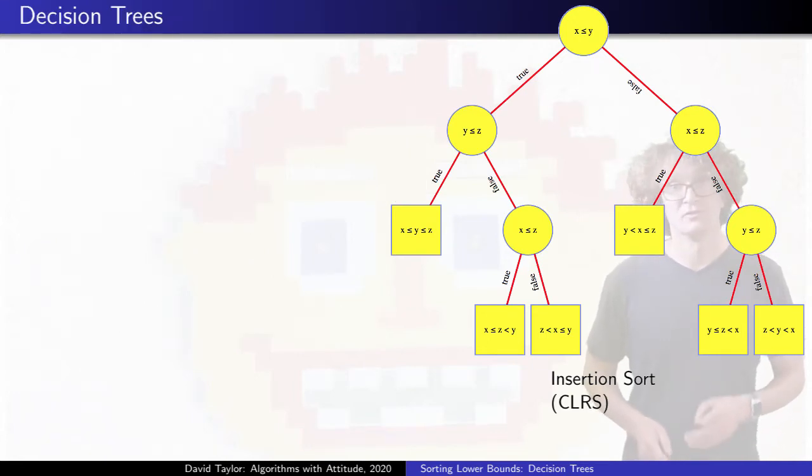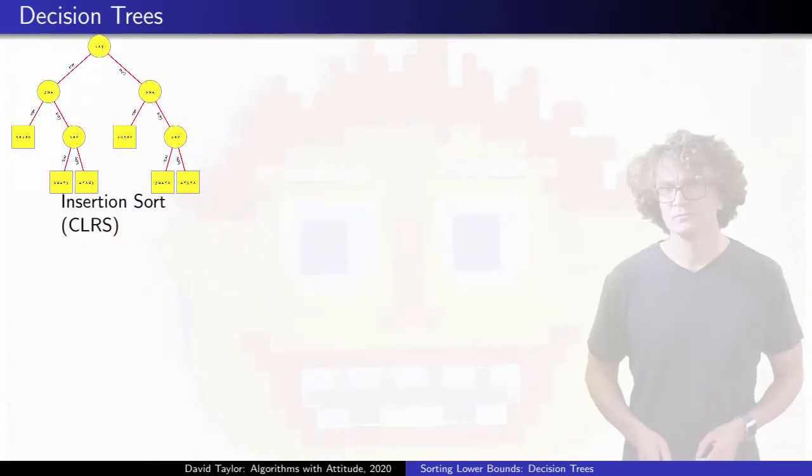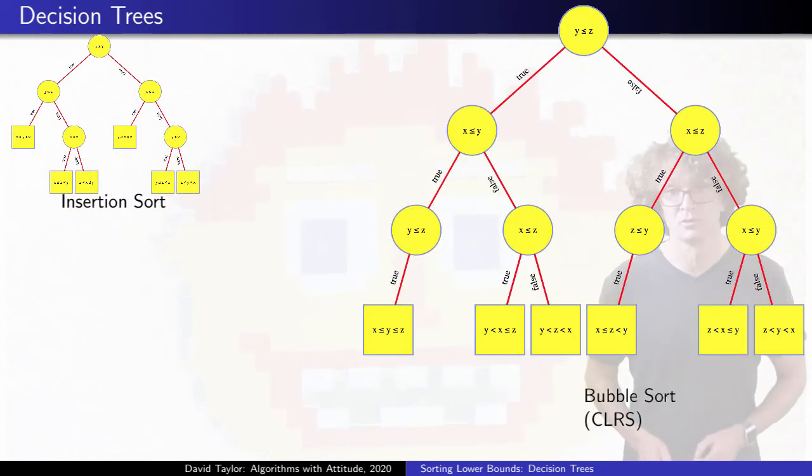Different sorting algorithms have different decision trees. If we look at bubble sort's tree, we see that it always performs three comparisons, although for two possible inputs, the last comparison doesn't tell you anything you didn't already know.